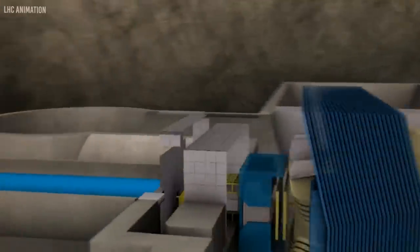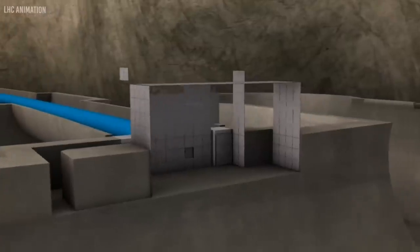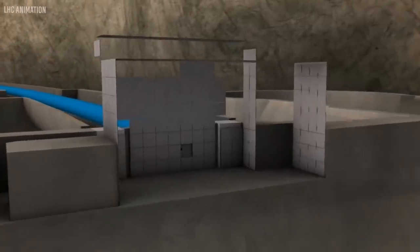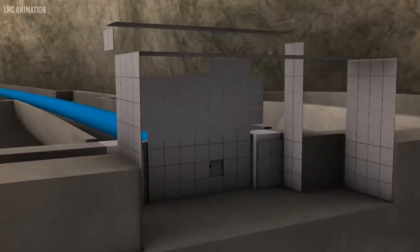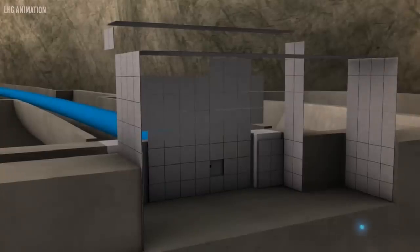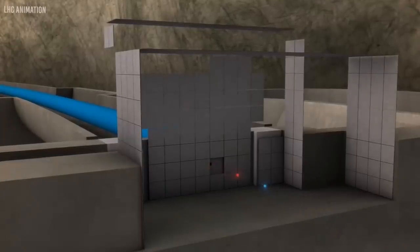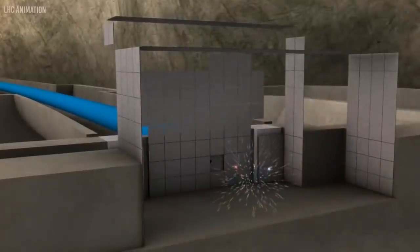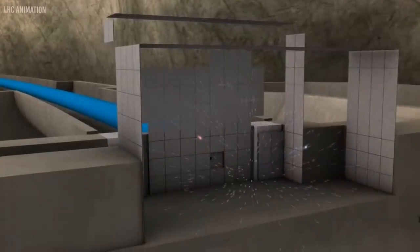In this ring, two counter-rotating beams of heavy ions or protons are accelerated to speeds within one millionth of a percent of the speed of light. At four points on the ring, the beams can intersect, and a small percentage of particles can crash into each other.